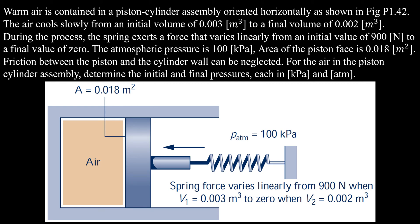In this problem, we have warm air contained in a piston-cylinder assembly oriented horizontally. The air cools slowly from an initial volume of 0.003 cubic meter to a final volume of 0.002 cubic meter. During the process, the spring exerts a force that varies linearly from an initial value of 900 newton to a final value of 0 newton. The atmospheric pressure is 100 kilopascal, and the area of the piston face is 0.018 meters squared. Friction between the piston and the cylinder wall can be neglected. Determine the initial and final pressures, each in kilopascal and atmosphere.